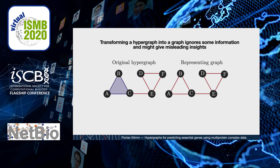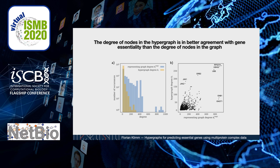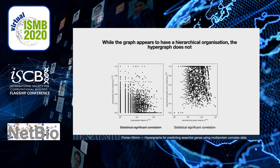Then we can investigate the representing graph and the hypergraph and see whether they give us different biological insights. We find two important differences. First, we compute the degree of the nodes in the hypergraph and the degree of the nodes in the graph, and find that the hypergraph degree is in better agreement with gene essentiality data than the degree of the nodes in the graph. Second, while the graph appears to have a hierarchical organization, the hypergraph does not. It has been reported that a statistically significant correlation between the graph degree and the local clustering coefficient can be a sign of hierarchical organization. We find that the representing graph has such a hierarchical organization whereas the original hypergraph does not. This indicates that we might observe hierarchical organization just from the projection procedure of a hypergraph to a graph, and not from the biological system itself. This finding might have important implications also for other applications.